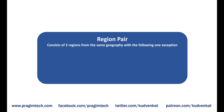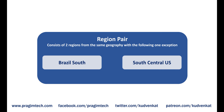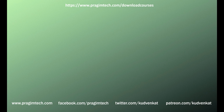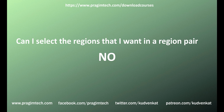A regional pair consists of two regions within the same geography. However, there is one exception: Brazil South is paired with South Central US, which is outside Brazil's geography. One question you might have is: can I select the regions I want in a region pair? The answer is no. Regions in a region pair are determined by Microsoft — we do not have any control over it. However, you're not limited to using just the regions in one given region pair. You can create your own BCDR solutions by deploying in any number of regions, and deploying across regional pairs will give you better business continuity and disaster recovery.